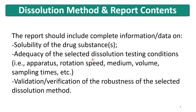The adequacy of the selected Dissolution testing conditions will involve the selection of apparatus — whether USP 1, USP 2, USP 3, or USP 4 — which must be clearly stated with justification. Data comparing apparatus 1 and 2 in parallel is typically provided, with justification for why a particular apparatus was selected. Similarly, the rotation speed, medium, media volume — whether 500 ml, 600 ml, 900 ml, or 1000 ml — and the sampling times are determined and documented. Validation or verification of the robustness of the selected Dissolution Method is also required in the report.